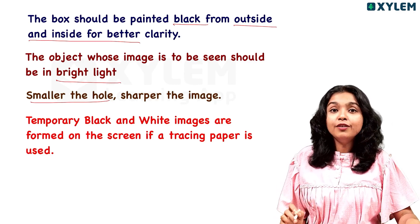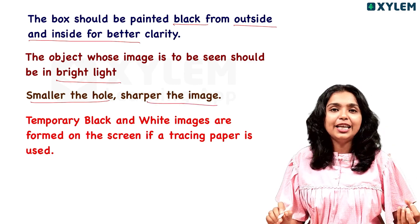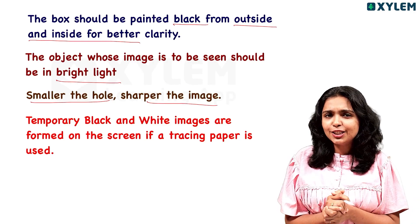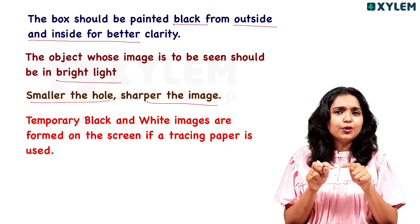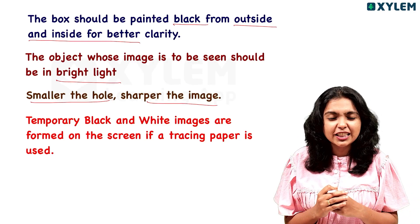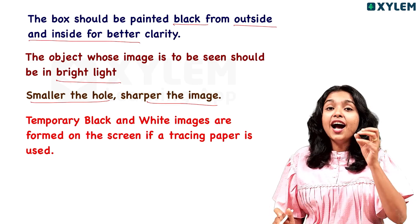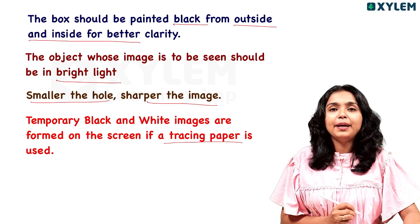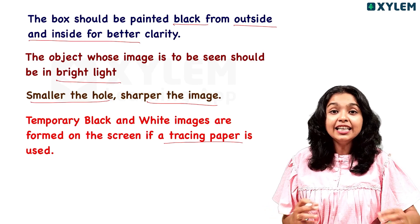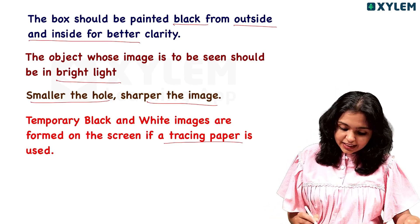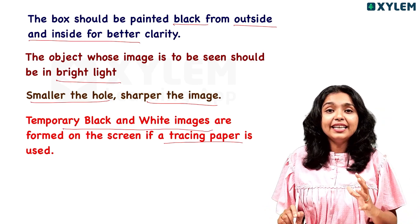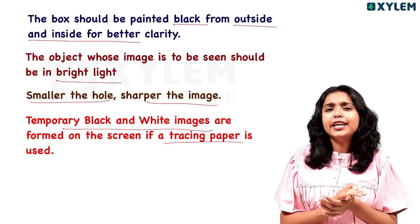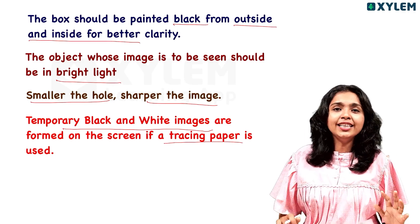Smaller the hole, the sharper the image. This is the second key point. On the opposite side, we will cut a small square and use tracing paper over it. The image formed is temporary and it is a black and white image.